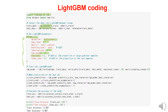Additionally, top_rate represents the proportion of data with the highest gradients in GOSS, and other_rate represents the proportion of data outside the top rate, with the default being 0.1. Then, we train the model using the defined parameters and the training data. As a result, when calculating the accuracy with the training data, we get an accuracy of 96.7%, and the same accuracy is observed when applying the testing data.